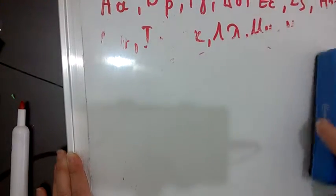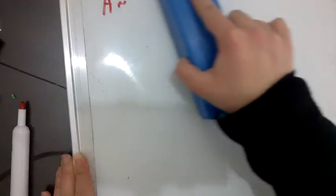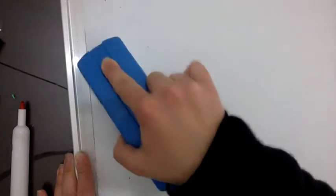Εγώ είμαι, εσύ είσαι, αυτός είναι, αυτή είναι, αυτό είναι. Εμείς είμαστε, εσείς είστε, αυτοί είναι, αυτές είναι, αυτά είναι. So, this is how we conjugate the verb είμαι, the verb to be in Greek.